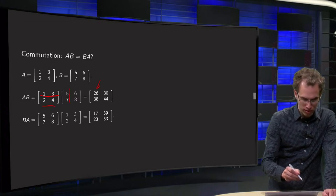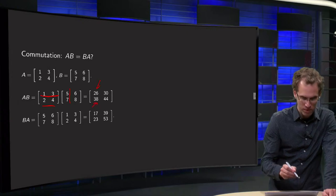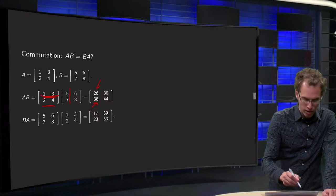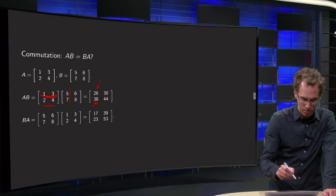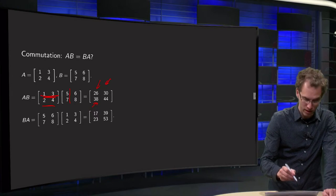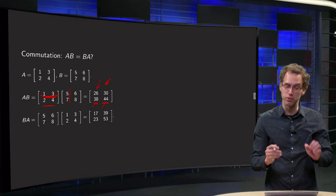Then we get 1 times 6 plus 3 times 8 equals 30 over there. And then finally, 2 times 6 plus 4 times 8 equals 44 over here. So that's A times B.